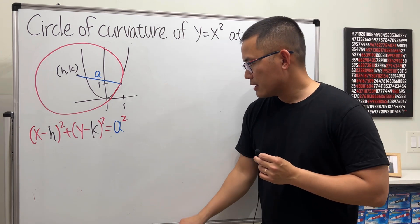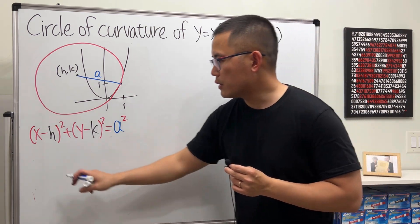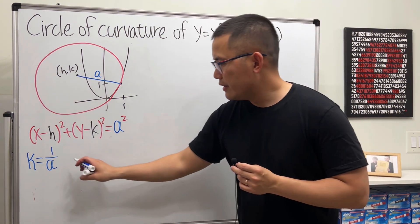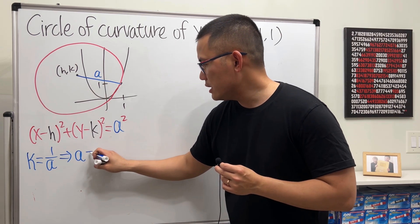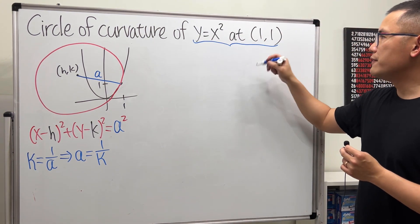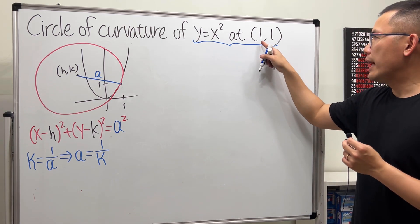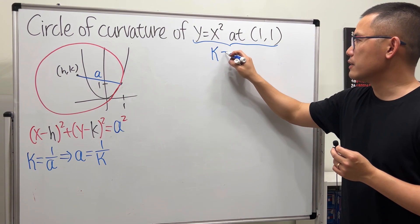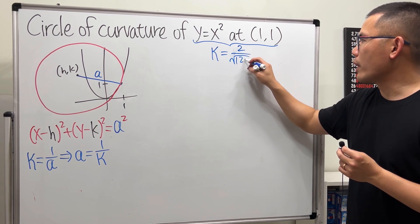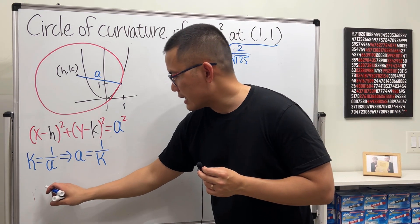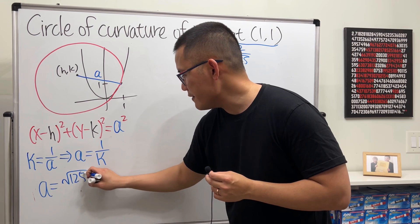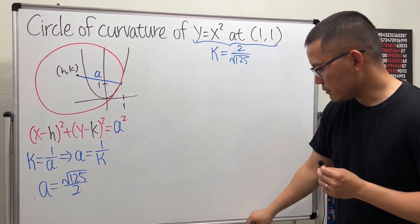In fact, whenever we have a circle, we know the curvature of the circle equals 1 over the radius. Therefore, the radius equals 1 over the curvature. And in fact, last time we found that when we have y equals x squared at x equals 1, kappa, the curvature, is equal to 2 over square root of 125. So in fact, we can see that a is just equal to the reciprocal of that, which is square root of 125 over 2. And we can put that right here.